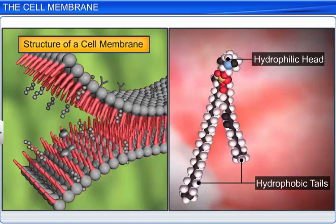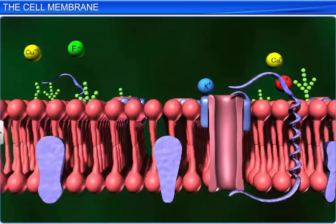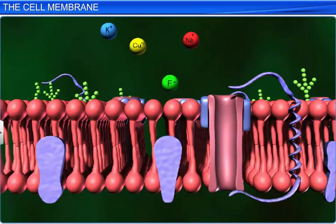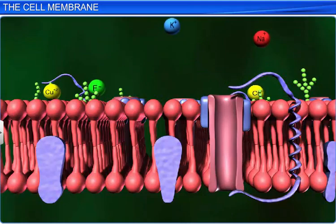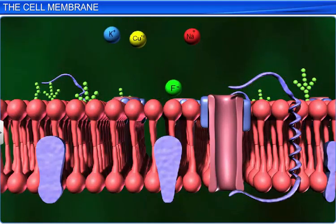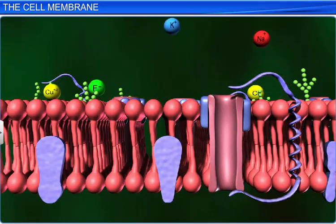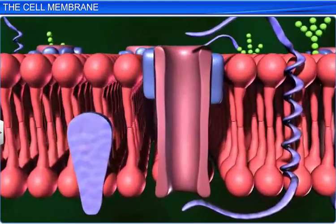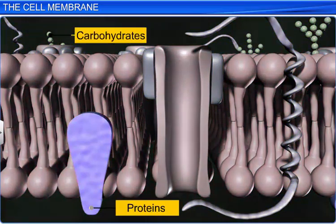Such an arrangement not only protects the tail from the aqueous environment, it also prevents polar molecules such as nucleic acids, proteins and ions from diffusing through it. Later, biochemical investigations revealed that apart from lipids, proteins and carbohydrates too are a part of the cell membrane.